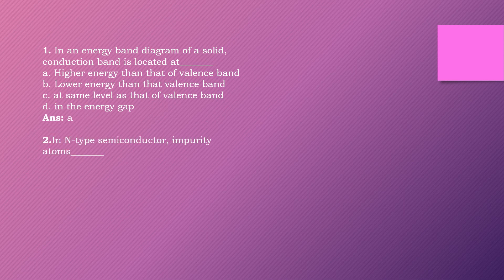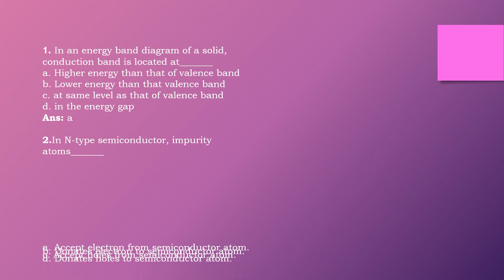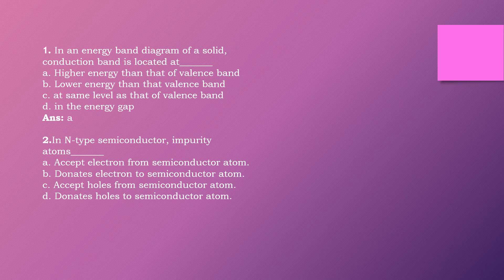Question two: In N-type semiconductor, impurity atoms dash. Options are: accept electron from semiconductor atom, donate electron to semiconductor atom, accept holes from semiconductor atom, donate holes to semiconductor atom. The right answer is option B: donate electron to semiconductor atom.